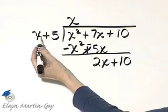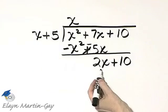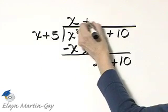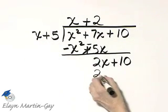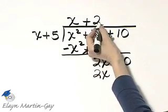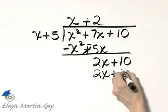What times x gives a product of 2x? Well, that would be 2. Now let's multiply. 2 times x is 2x, and don't forget to multiply 2 times 5, that's 10.